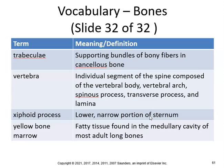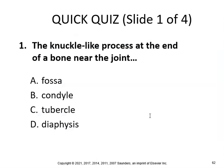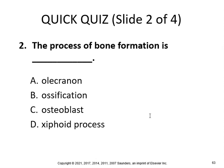Yellow bone marrow is fatty tissue found in the medullary cavity of most adult long bones. Quick quiz: the knuckle-like processes at the end of a bone near a joint are called condyles, and the process of bone formation is called ossification.